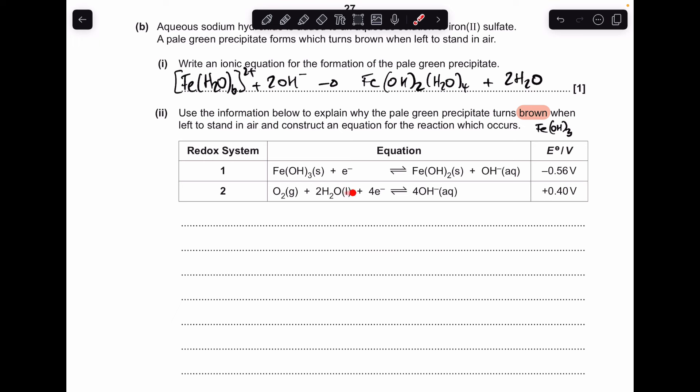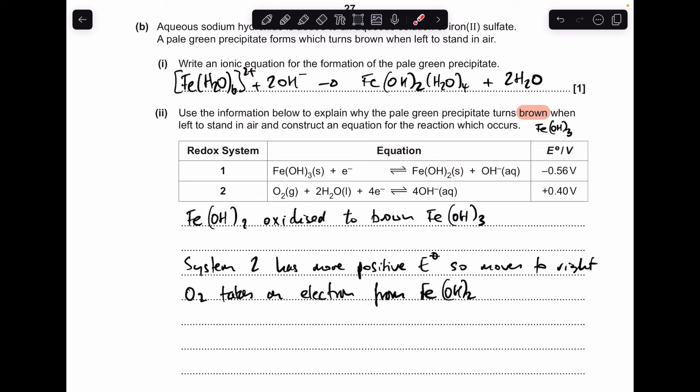So that means system 2 is going to move forwards, and system 1 will move in reverse. So there's all that written up. So we're saying Fe(OH)₂ is oxidised to the brown Fe(OH)₃. That's because system 2 has got the more positive standard electropotential, so it moves to the right. What's happening is oxygen is taking an electron from that Fe(OH)₂.